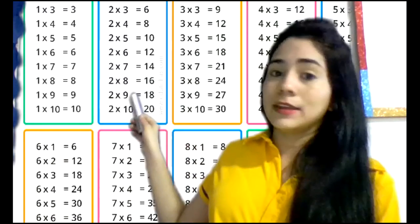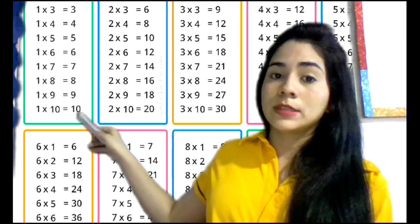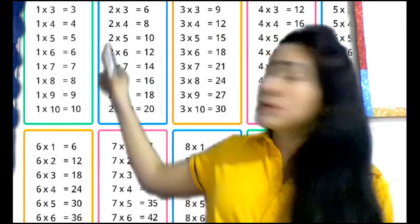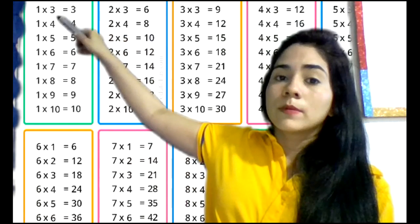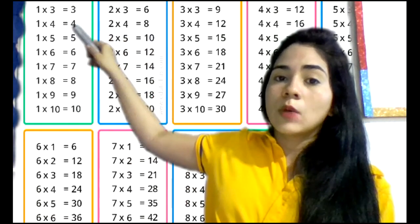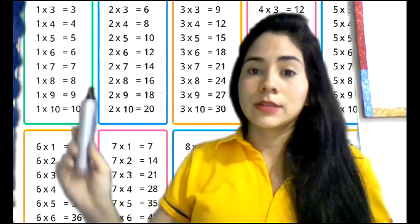Entonces, mira que aquí dice, aquí dice 1 por 9 equals 9. ¿Si ves? ¿Si ves aquí donde dice 1 por 3? 1 by 3 equals 3. 1 by 4 equals 4. ¿Si ves?